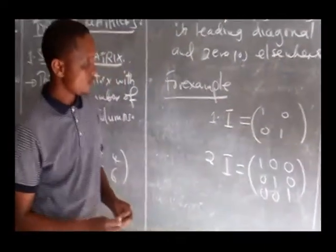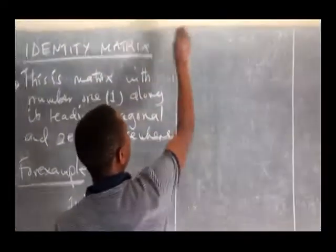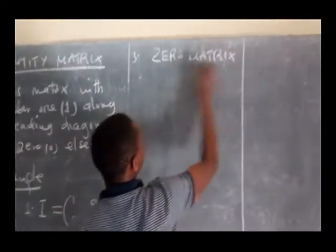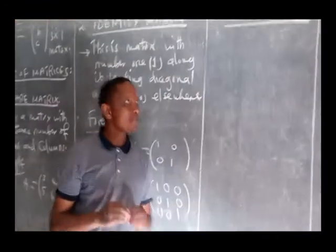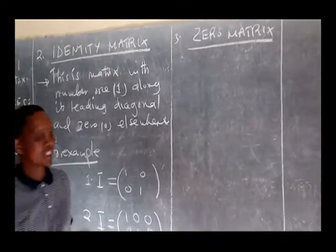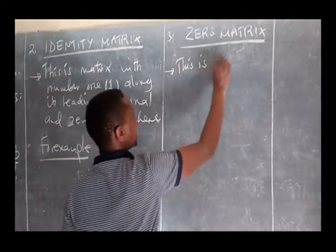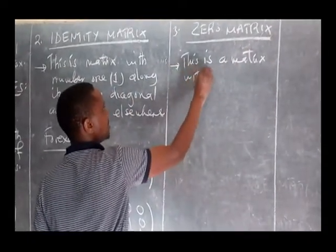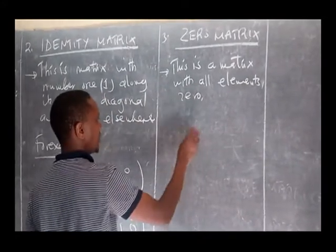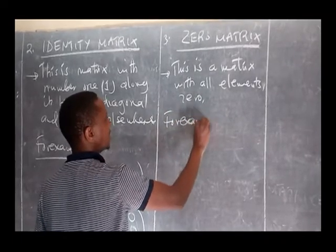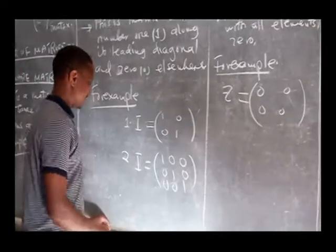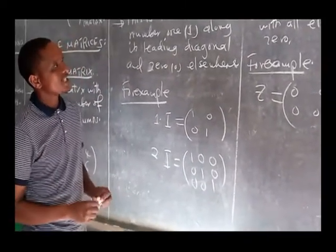Another type of matrix is called the zero matrix. A zero matrix is a matrix with all elements equal to zero. Any matrix with all elements zero qualifies as a zero matrix. We normally name this matrix using the letter Z. For example: zero, zero, zero, zero. That is another type of matrix — the zero matrix.